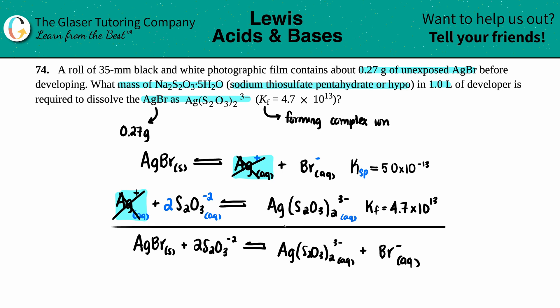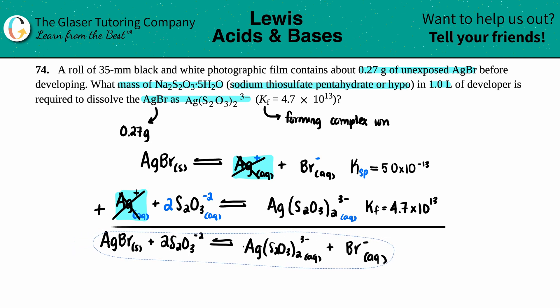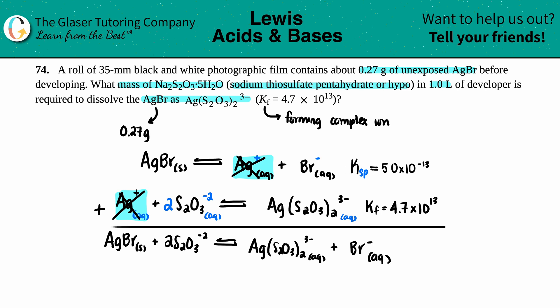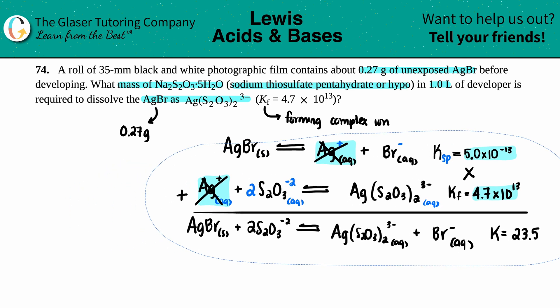When we add equations together we multiply the K values. So it's 5.0 times 10 to the -13 times 4.7 times 10 to the 13th. That gives us a new K value of 23.5, which we'll use for the combined equation.